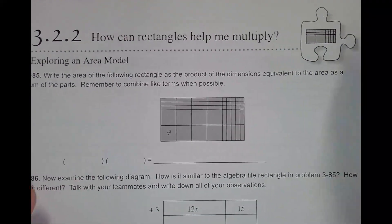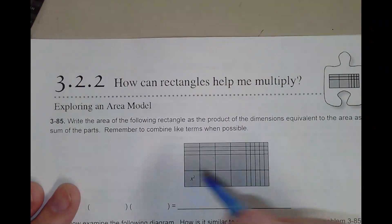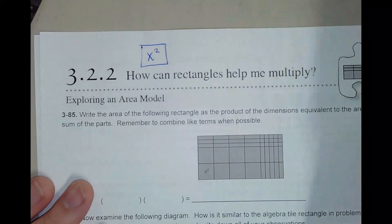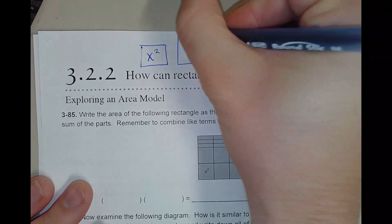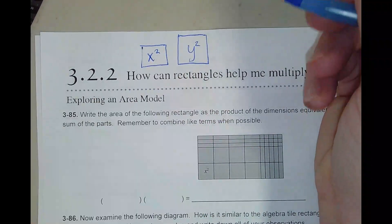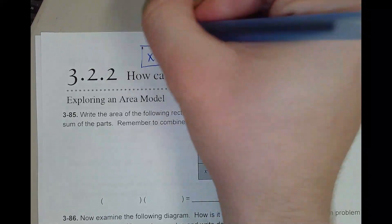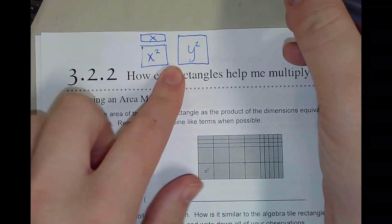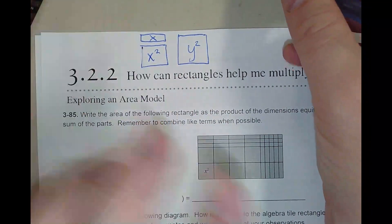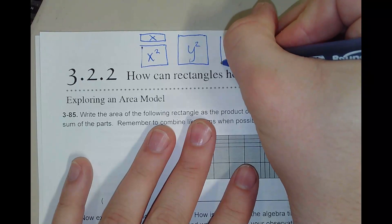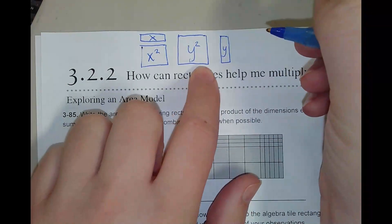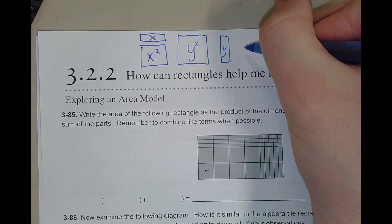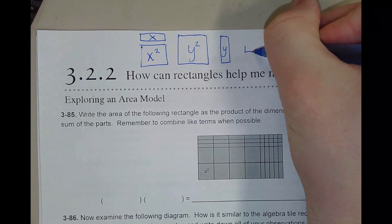Our first task is to remember what the various types of tiles are. If it's a square tile, it's likely going to be an x-squared tile or a y-squared tile. The y-squared tile is typically bigger than the x-squared tile. There's also an x-tile, which is the same dimension as x-squared but it's a rectangle, not a square. And there's also a y-tile, which is the same dimension as y-squared but is a rectangle, not a square.